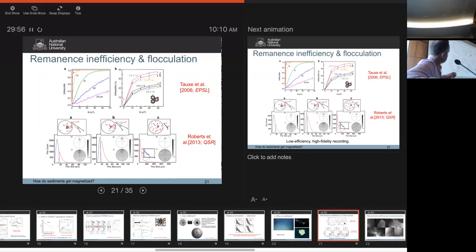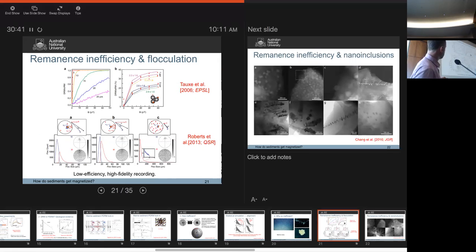She did some new models in this paper that we did together, before Dave Heslop's hydrodynamic floc model. What Lisa did here was she separated flocs that can be magnetically aligned from those that are hydrodynamically aligned. Even if you have a tiny portion of magnetically aligned flocs, you can see that most of the flocs are random, recording random directions. But you can get a bias towards a really reliable field direction with flocs. I think this goes a long way to describing the inefficiency of sedimentary magnetizations. This is producing a low-efficiency magnetization, but a high-fidelity recording.